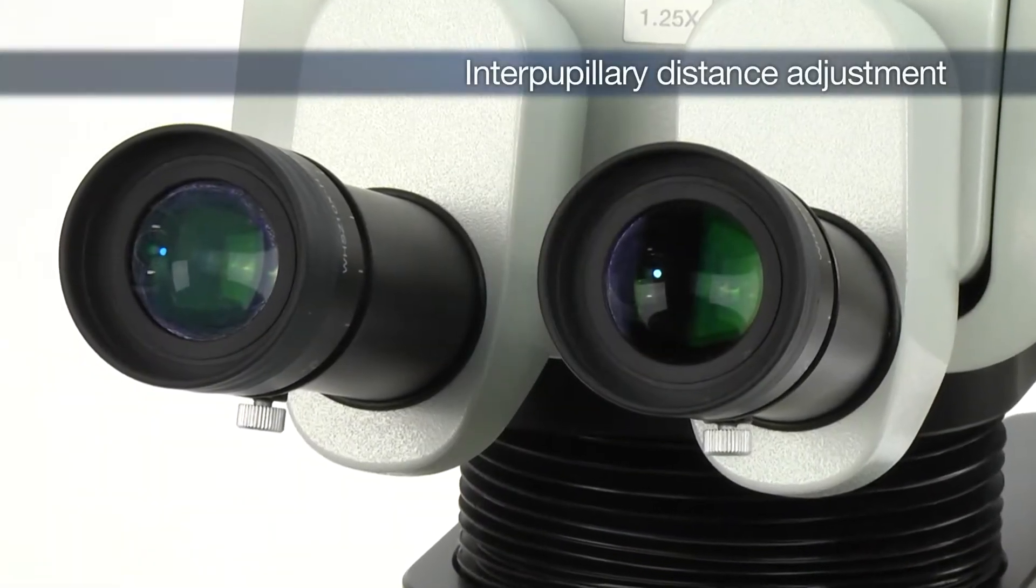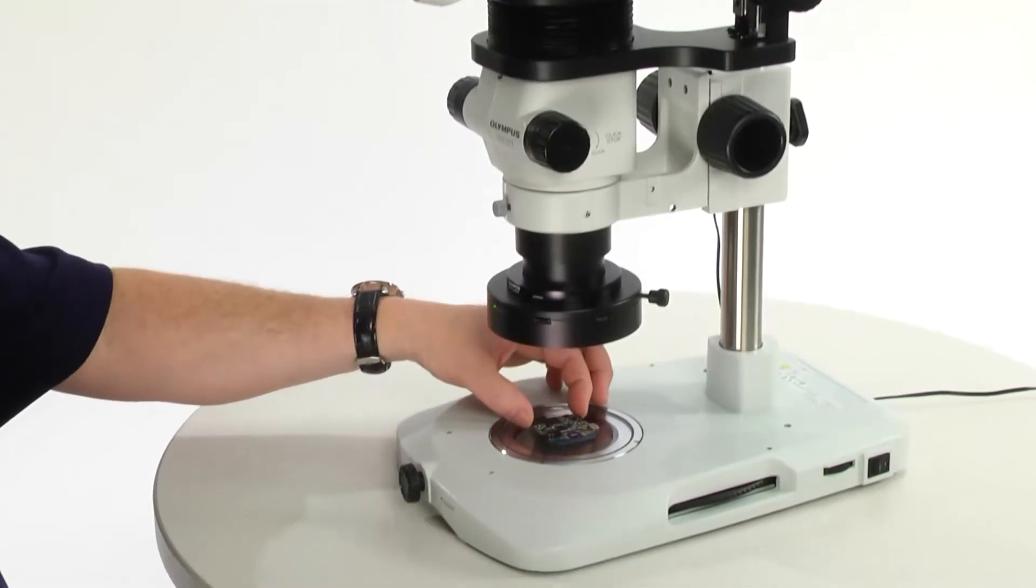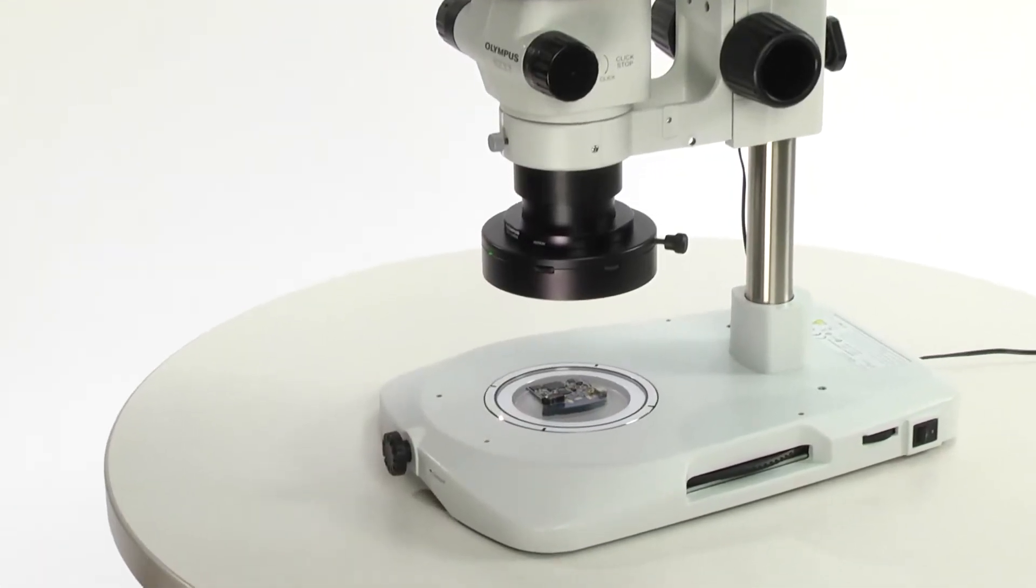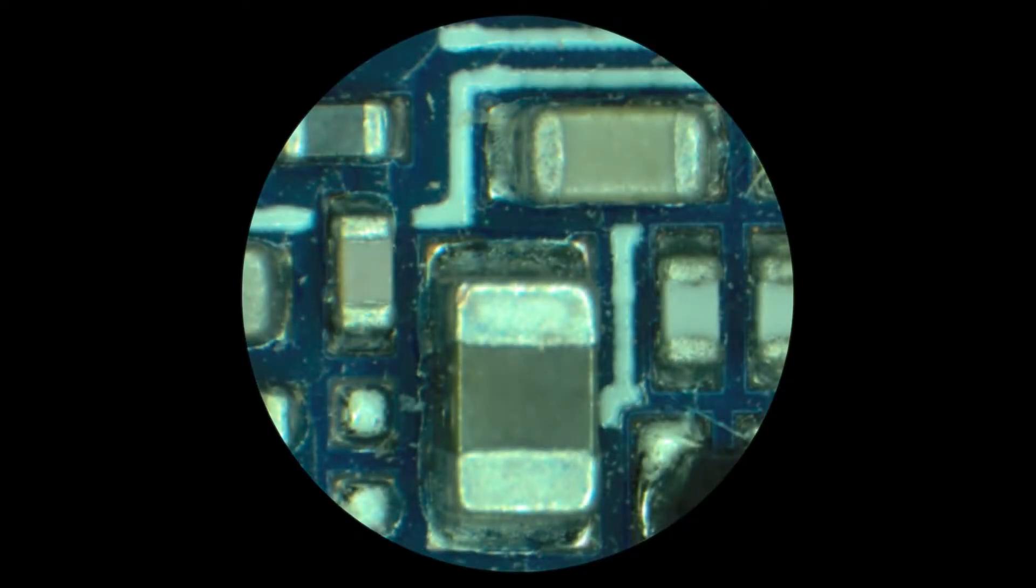Adjusting the interpupillary distance is necessary to obtain proper binocular vision. First, place a flat sample on the stage. Adjust the lighting and bring the sample into focus.